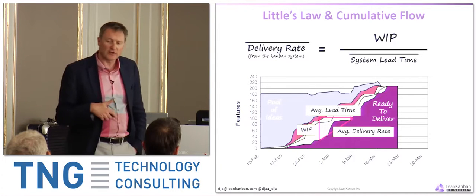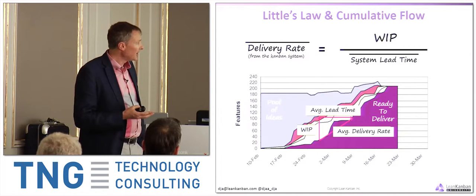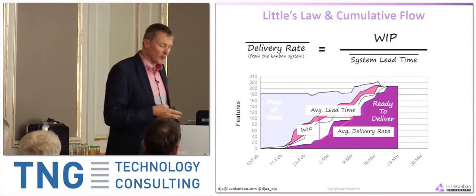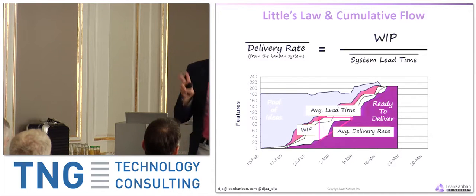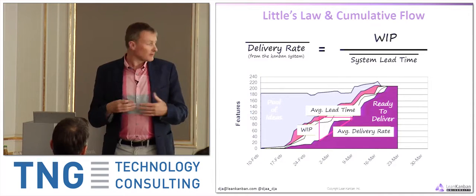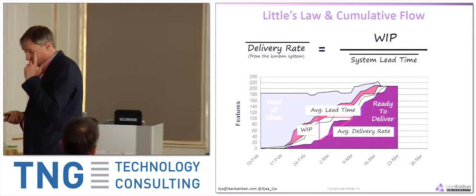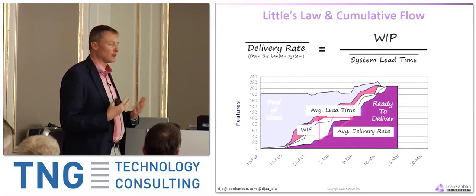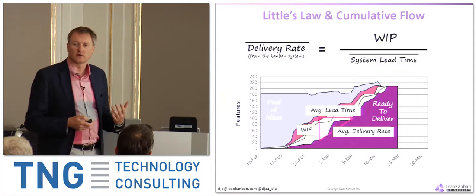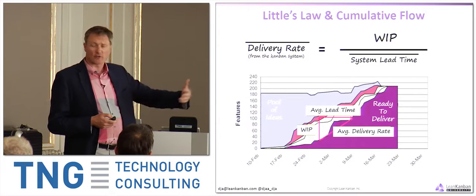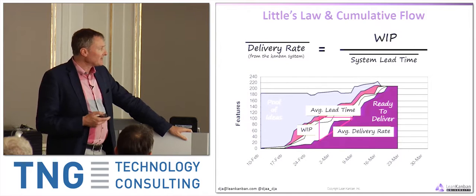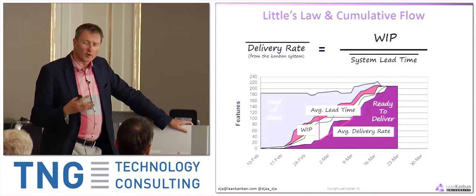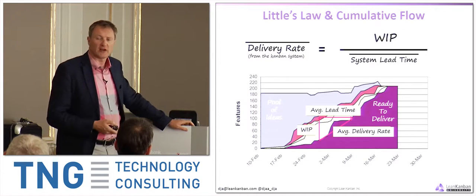This becomes very important for forecasting — how much work can we get done over a period of time? Over the next six months, capacity would be six months times the average delivery rate per month within some bound of variation — maybe plus or minus 5% of the average, because things regress towards the mean fairly quickly. In software development, four or five months of data gives you very close regression to the mean.